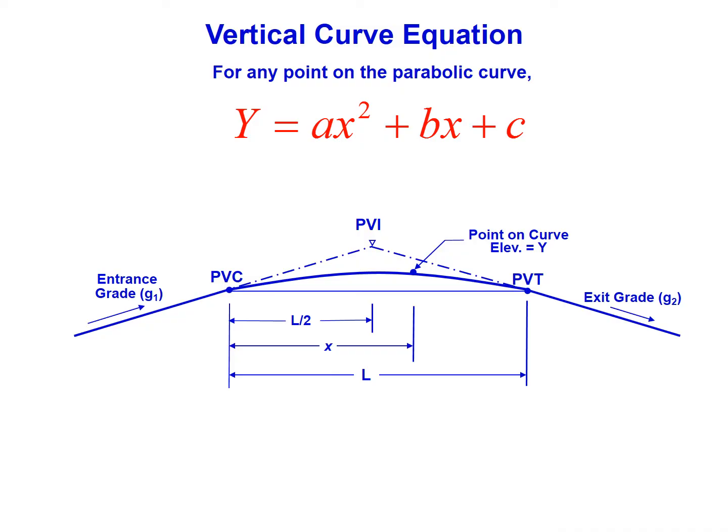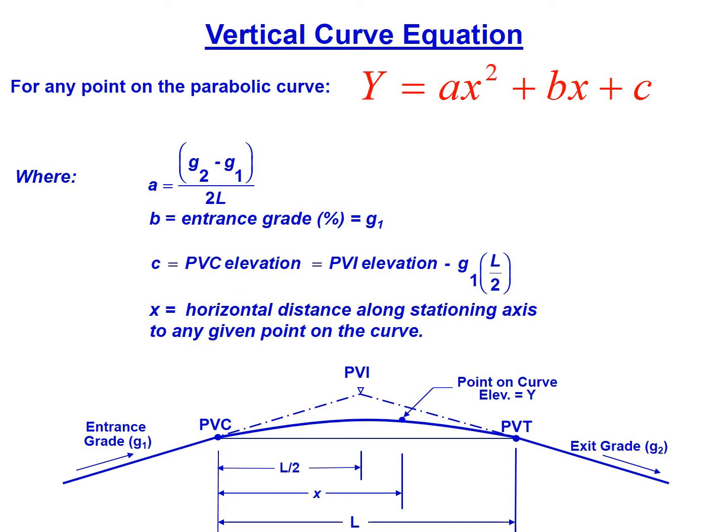Y equals AX squared plus BX plus C, this is our vertical curve equation. We're going to specify it by using the terms that are specific to a vertical curve. For our vertical curve, the term A is G2 minus G1 over 2 times L. Making sure we keep the grades in that case in percent and the length L in stations. B is the entrance grade in percent, that's G1. It's important to make sure if it's positive, we keep that positive, and if it's negative, we carry the negative with us.